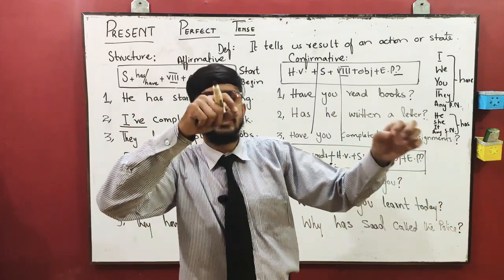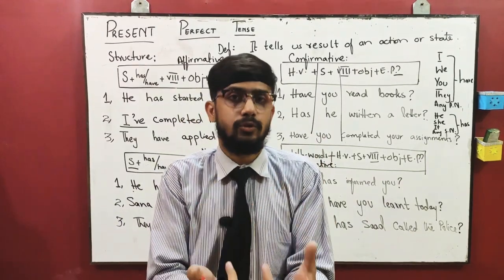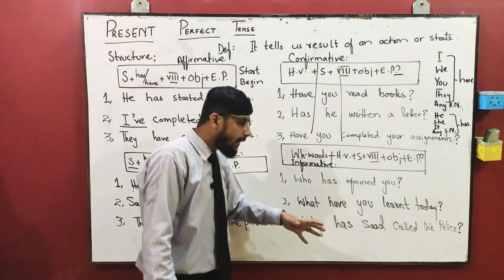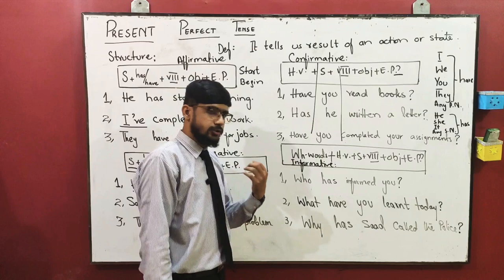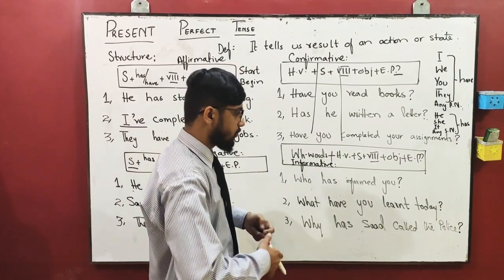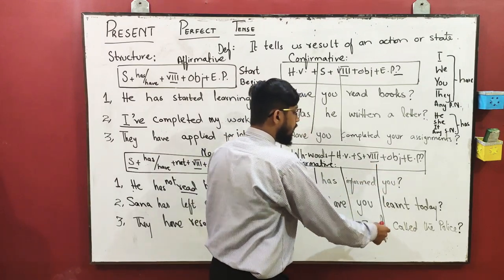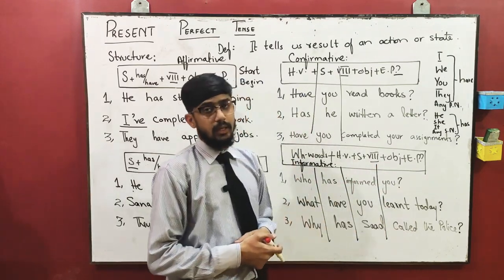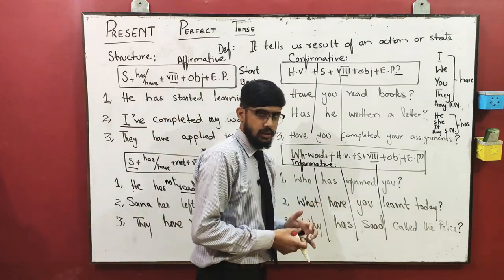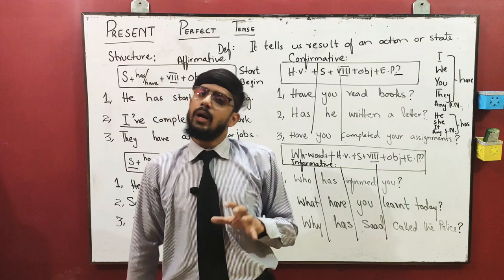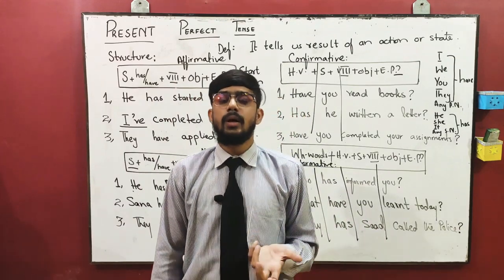The next is: why has Saad called the police? Saad ne police ko kyun bulaya? Saad informed the police, police came out from there and police came here, action was completed, sentence was made and we converted it to a question. You can look at the structures - your sentence and question can be completed: wh-words, helping verb, then third form of verb. If there is a subject, you use subject, or you'll use third form directly.